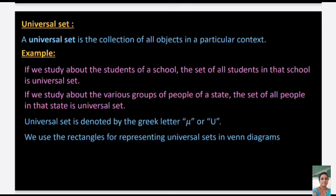Universal set: A universal set is the collection of all objects in a particular context. For example, if you study students of a school, the set of all students in that school is the universal set. If you study various groups of people in a state, the set of all people in the state is the universal set. The universal set is denoted by μ or U, and is represented by a rectangle in Venn diagrams.